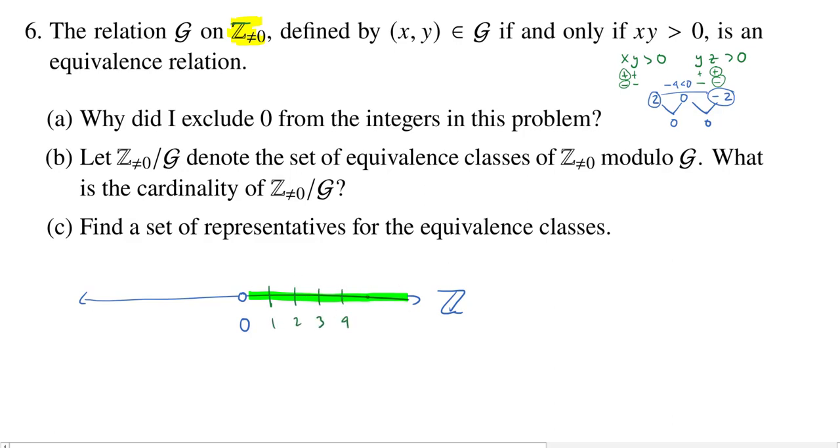All of these are going to be in the same equivalence class. Because when you multiply them together, you get something which is positive. So if you take the set of positive integers, these form an equivalence class under this relation G.